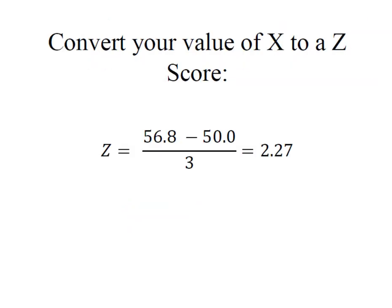Just like in the previous instance, we convert our value of x to a z. 56.8 pounds, my value of x, minus the mean of 50 divided by the standard deviation gives me a z-score of 2.27. That's a positive z-score because 56.8 is above the mean.